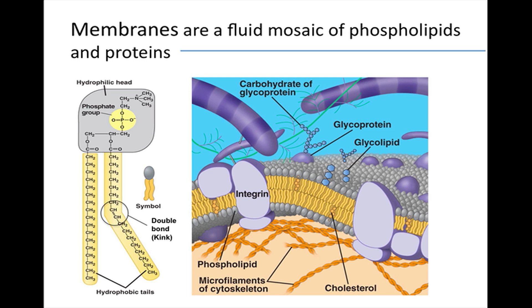In animal cells, the steroid cholesterol wedged into the bilayer helps stabilize the membrane at warm temperatures but also helps keep the membrane fluid at lower temperatures.